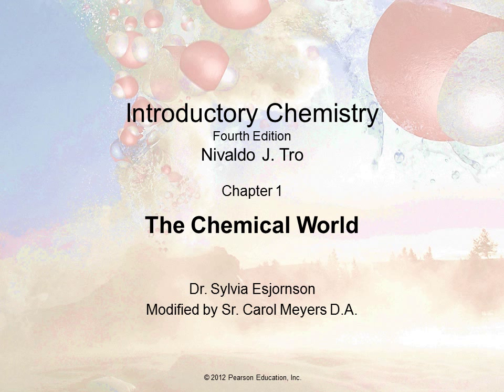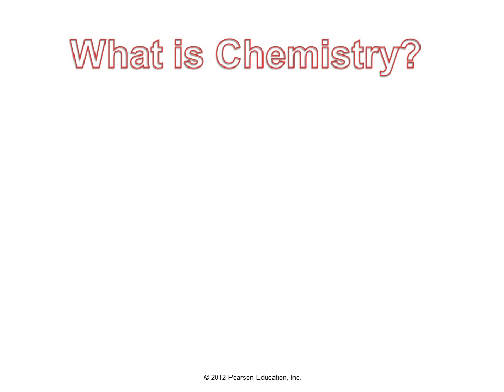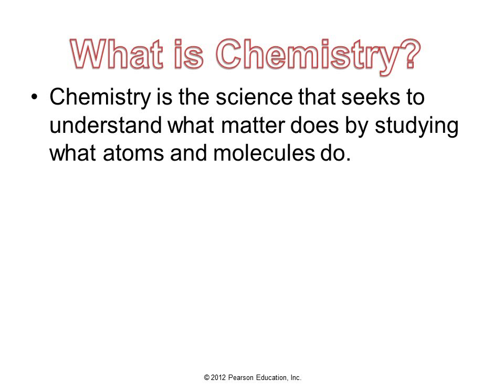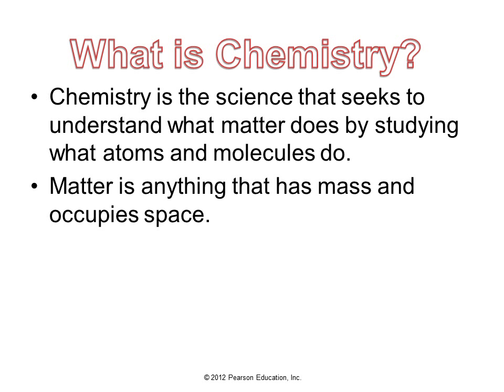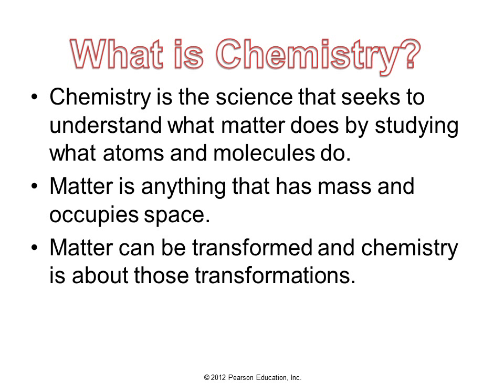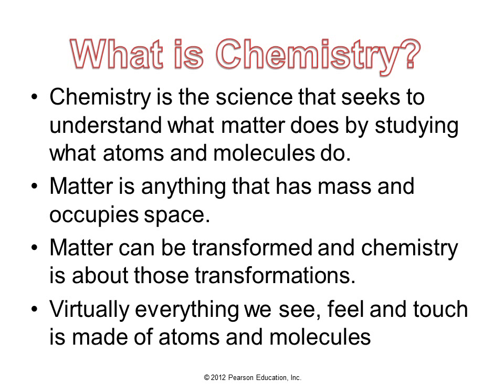Welcome to Introductory Chemistry. In chapter one, we begin to learn about how to think of material in terms of atoms and molecules. It requires imagination and understanding. Chemistry is the science that seeks to understand what matter does by studying what atoms and molecules do. Matter is anything that has mass and occupies space. Matter can be transformed, and chemistry is about those transformations. Virtually everything we see, feel, and touch is made of atoms and molecules.